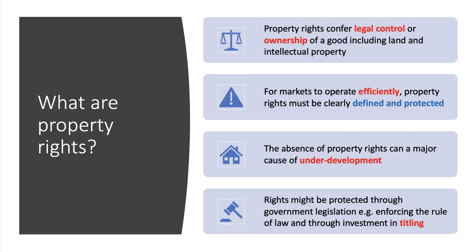Most economists agree that for markets to operate efficiently and to avoid instances of market failure, property rights have to be clearly defined and protected. That's one of the key jobs for any government, even in a free market economic system. Indeed, the absence of — or the partial absence of — property rights can be and is a major cause of underdevelopment. Governments, both nationally and internationally, can protect property rights through law, through legislation, enforcing the rule of law in the courts, and possibly investing in titling — the process of identifying who owns which land.